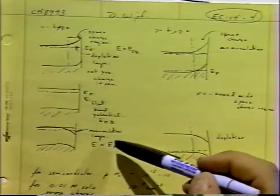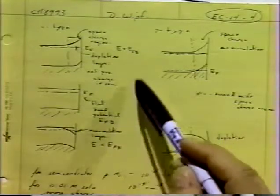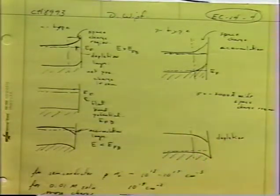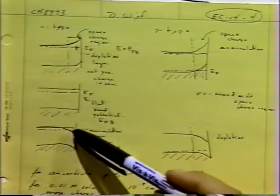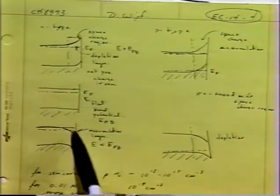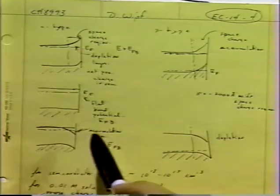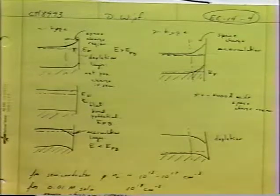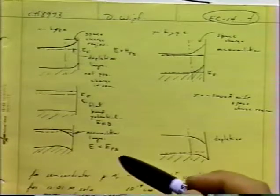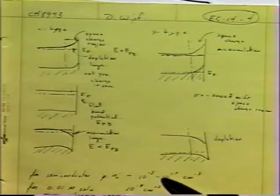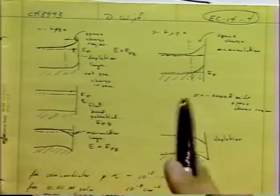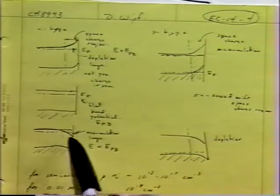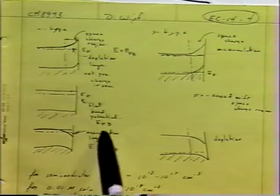On the other hand, if our applied potential is less than the flat band potential, instead of a depletion layer of electrons, electrons will flow in from solution into the semiconductor, accumulating at the interface. The bands will now bend down because we have a net negative charge on the semiconductor. At this point the semiconductor will act a lot like a metal, because there's an excess of electrons in the conduction band that can move freely — this is the accumulation layer for n-type.